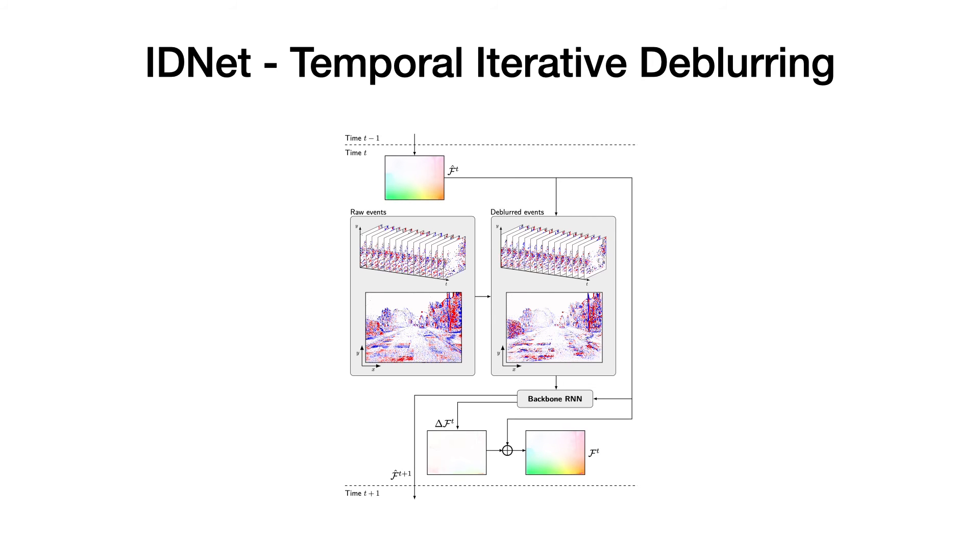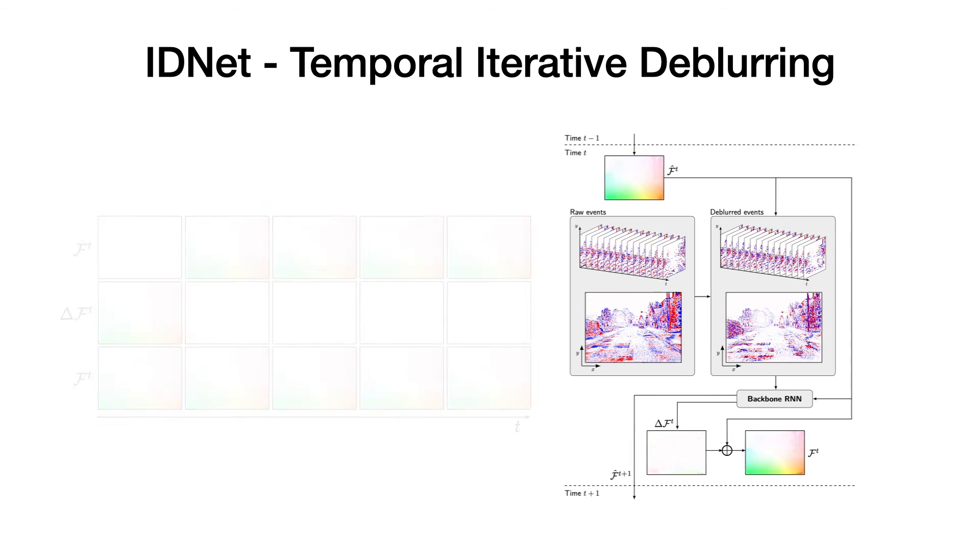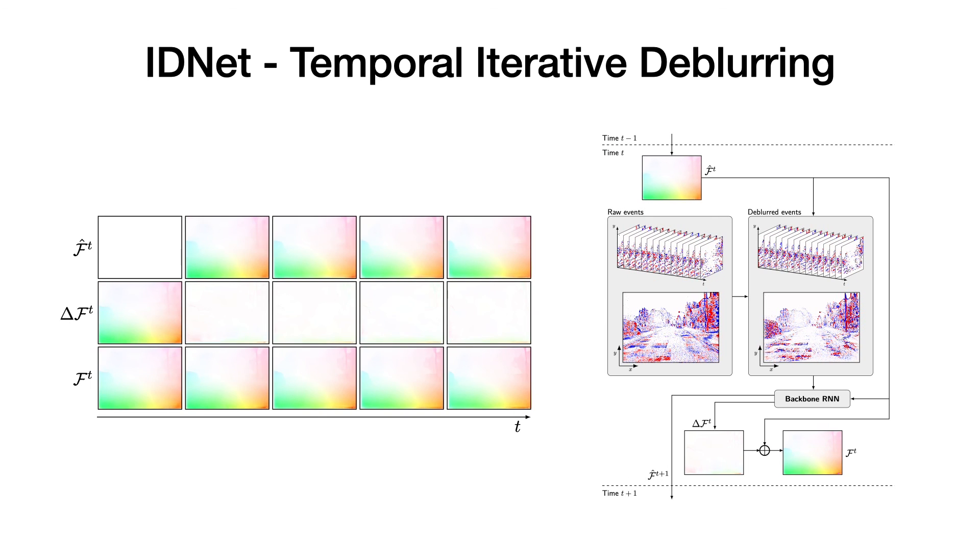We further propose an update scheme TID, which works with streaming inputs and is drastically faster. TID shares the same backbone architecture and event de-blurring step as ID's scheme, but iterates only once per batch of events, and additionally predicts a coarse flow for de-blurring the events from the next time step. As new events arrive, the network yields improving quality for both next flow prediction and current refined flow.